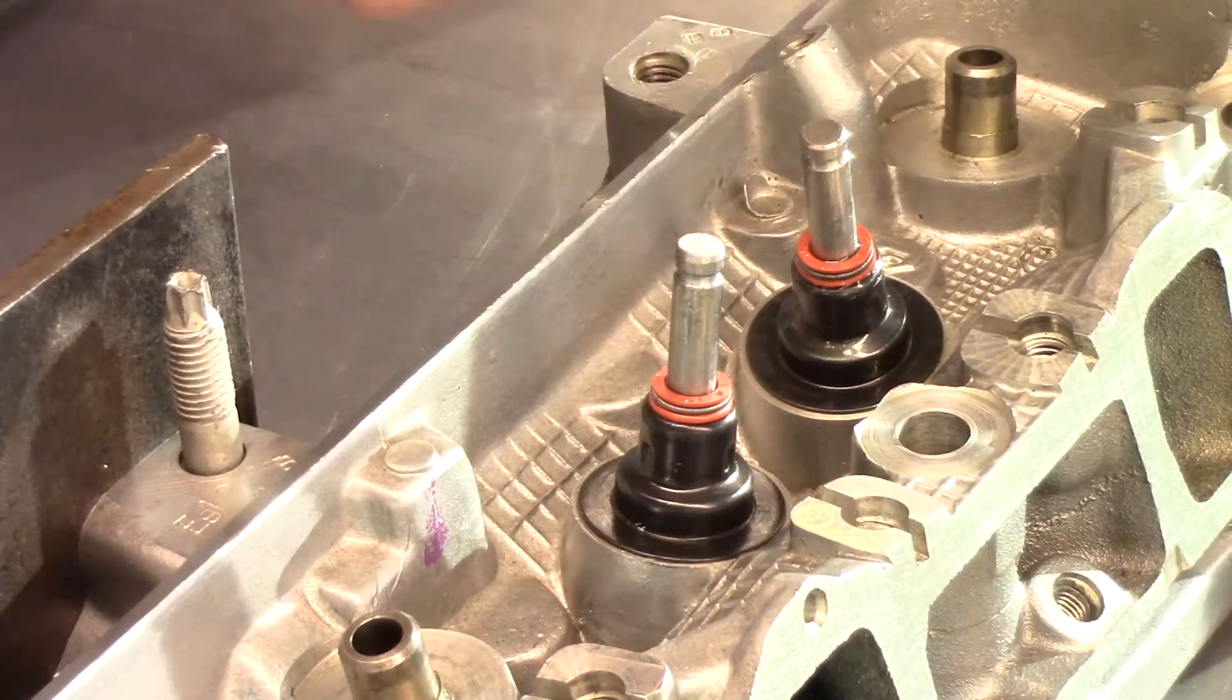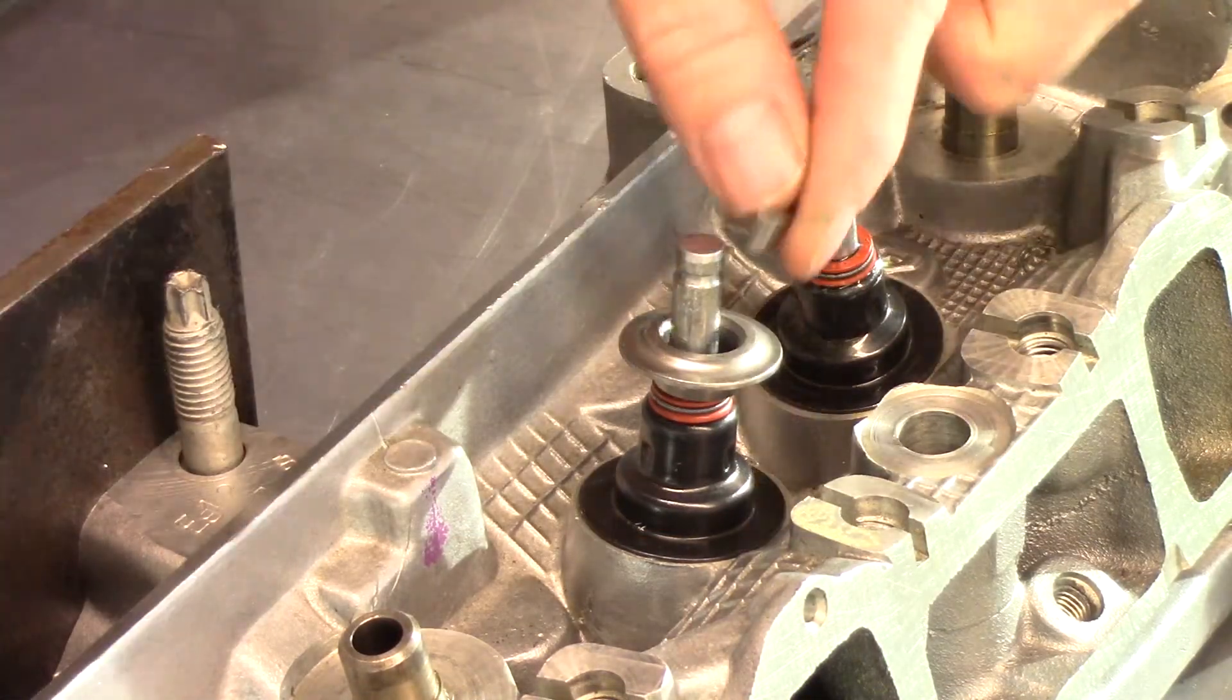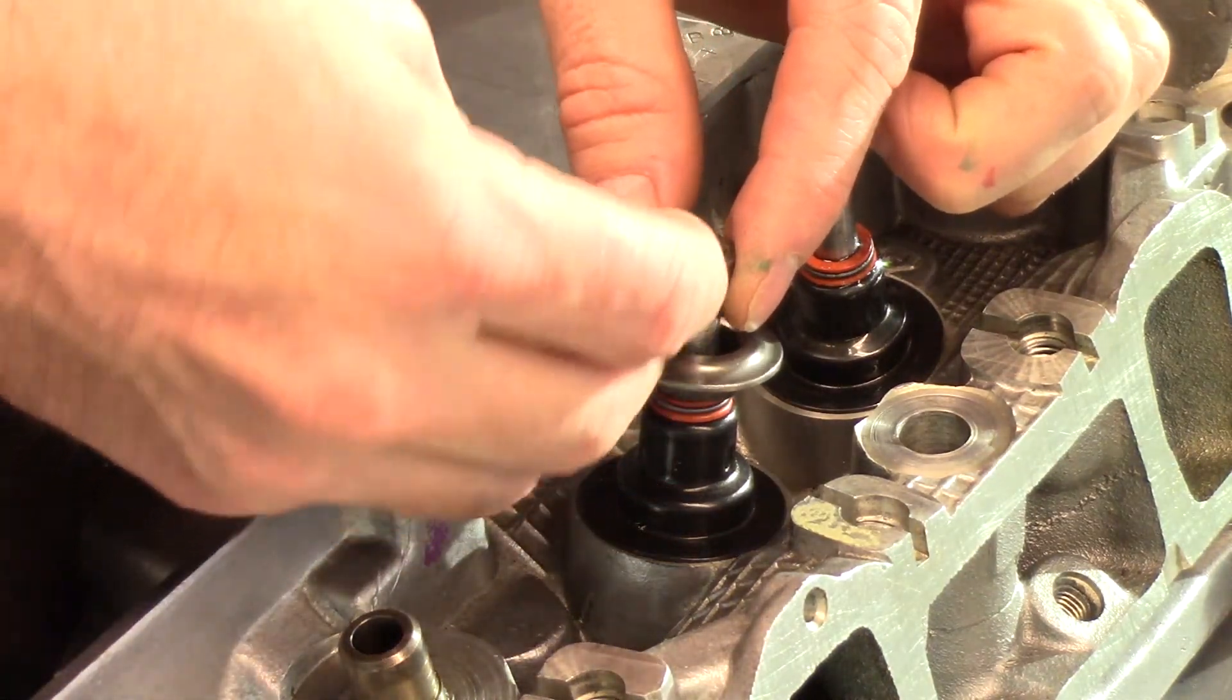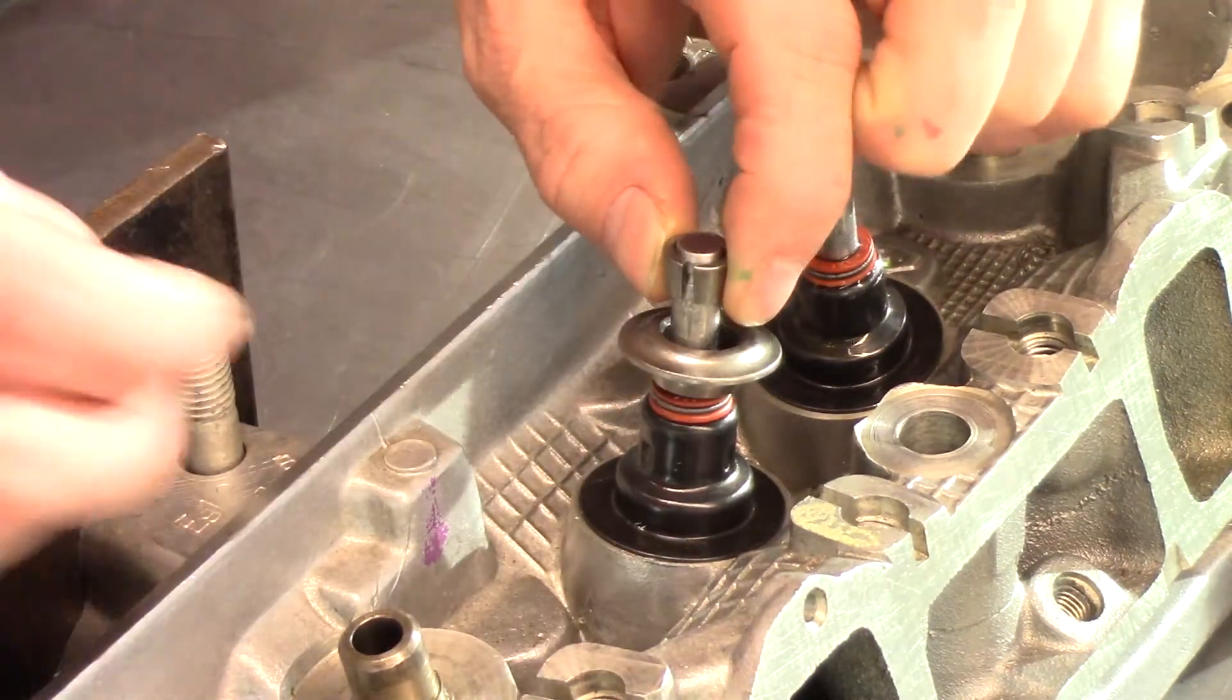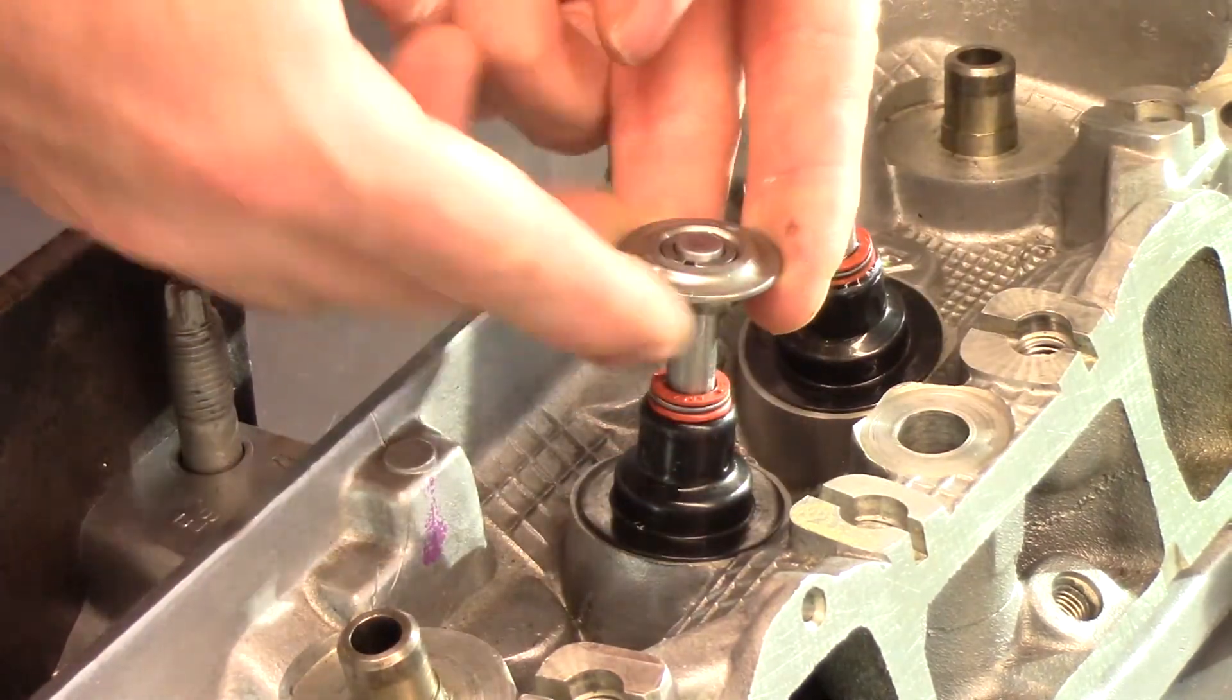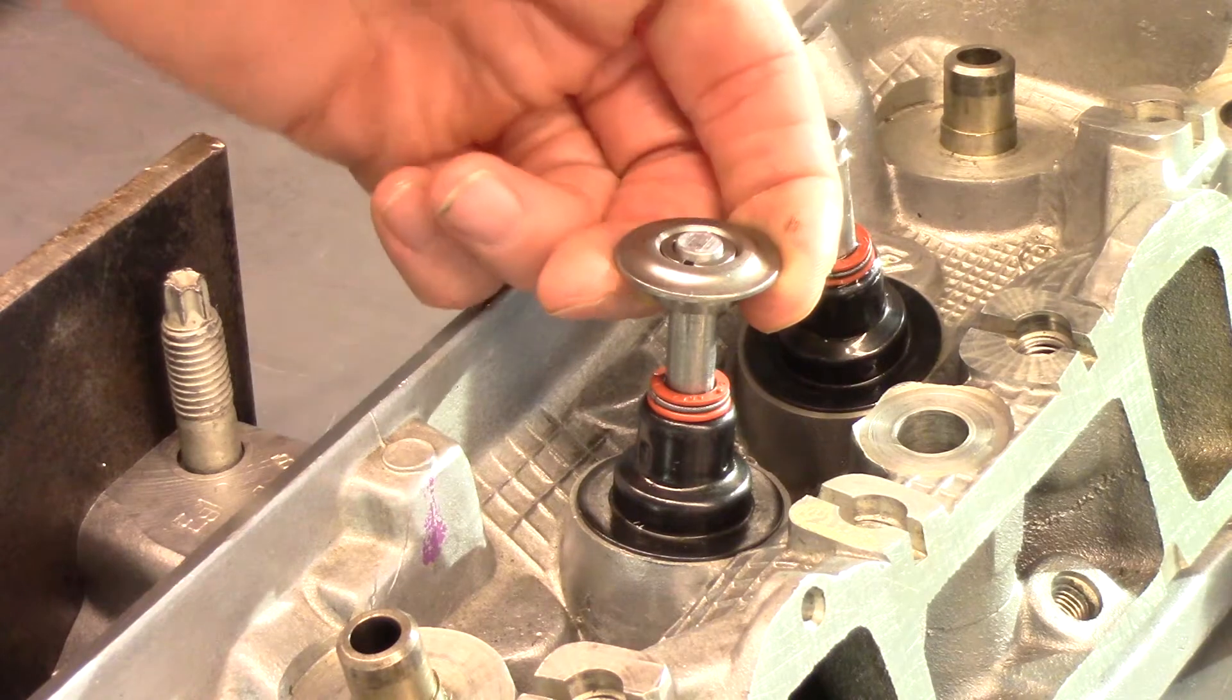With the valve spring removed, hold the valve closed with your hand and reinstall the valve spring retainer with the keepers. Use your hand to maintain a closing force on the valve while gripping the underside of the valve spring retainer.